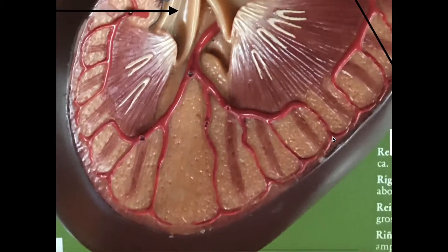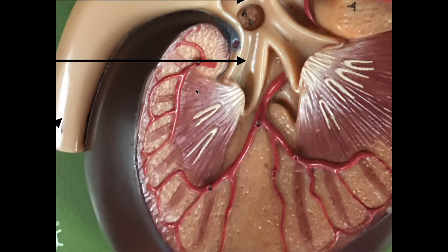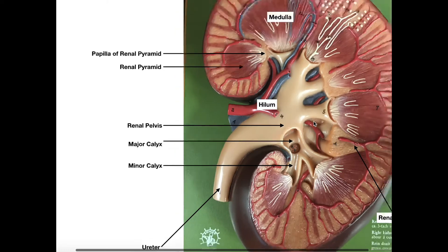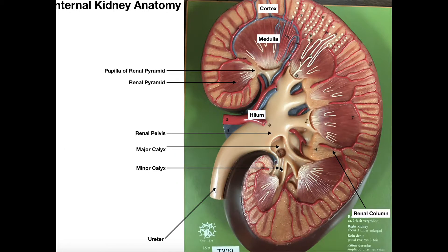Looking at this renal pyramid here, we can see that these collecting ducts are moving toward this whitish region, which is the papilla of the renal pyramid. These collecting ducts are collectively moving toward this region, and they are going to collectively empty their contents into an area called the minor calyx. The papilla is the region where the collecting ducts reach their final point before emptying into the minor calyx.